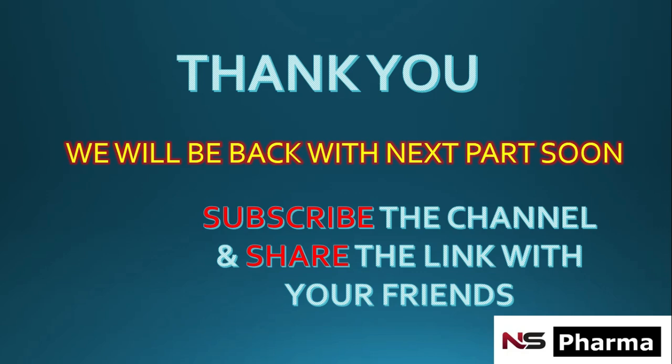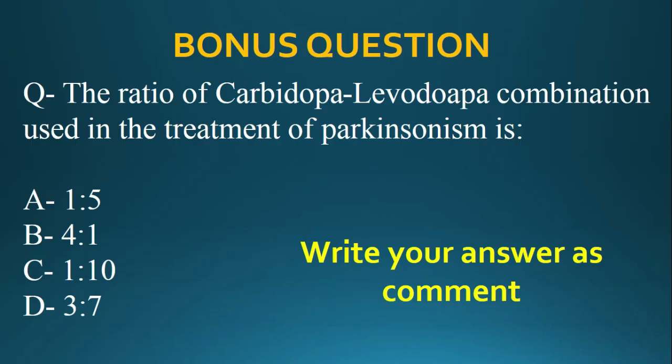Thank you for watching this video, hope you understood all the questions. Bonus question: The ratio of carbidopa to levodopa combination used in the treatment of Parkinsonism — options are (a) 1:5, (b) 4:1, (c) 1:10, (d) 3:7. You can comment your answer!